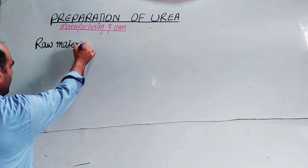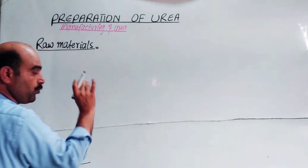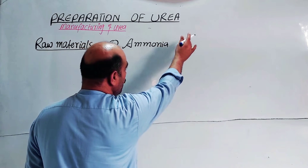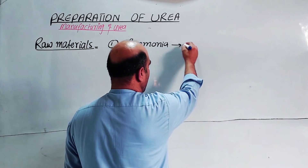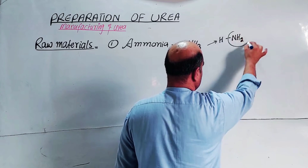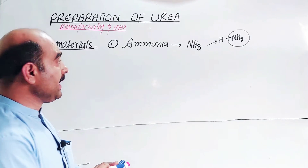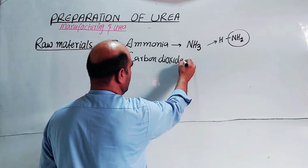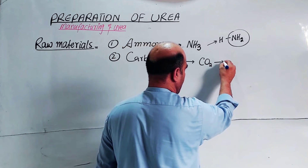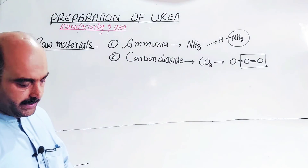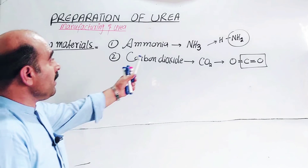The raw materials — basic materials — which are used for the preparation of urea in industry: the first raw material is ammonia (NH₃). Ammonia will provide the amine group. The second raw material is carbon dioxide (CO₂). The carbonyl group will be provided by carbon dioxide. So the two raw materials are ammonia and carbon dioxide.